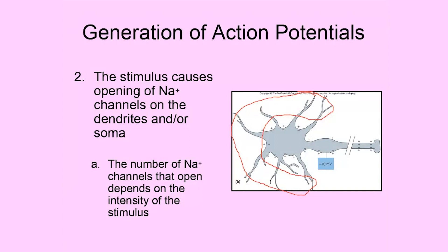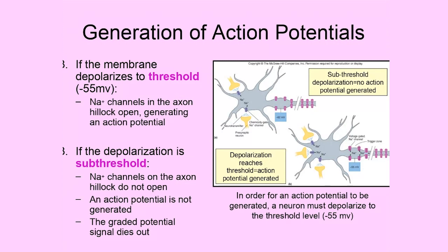Graded potentials can be of two types: threshold graded potentials or subthreshold graded potentials. Looking at a subthreshold depolarization — the diagram shows a neuron with the synaptic knobs of other neurons in close proximity, releasing small blue dots representing chemical neurotransmitters onto the cell body of this neuron.